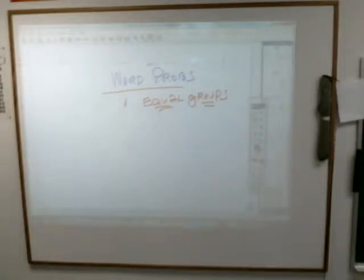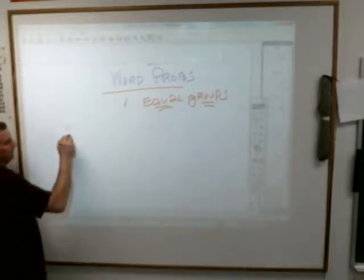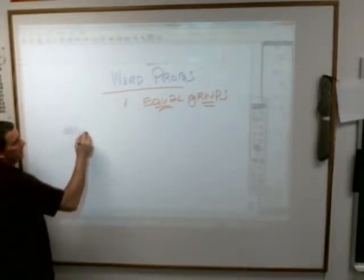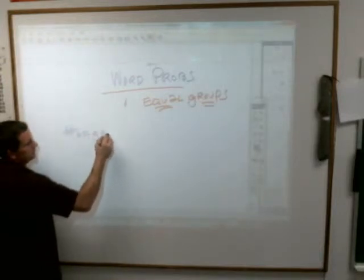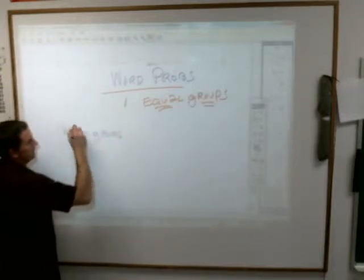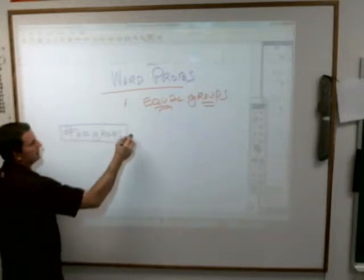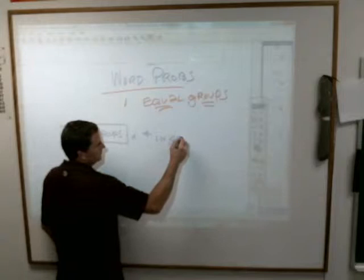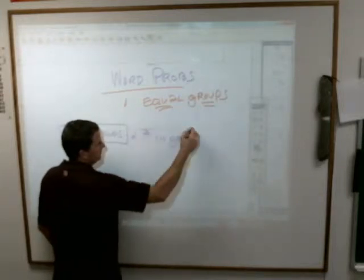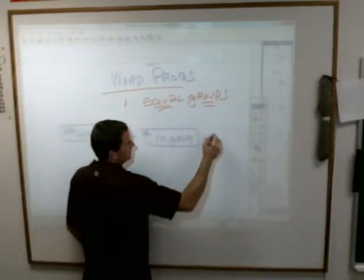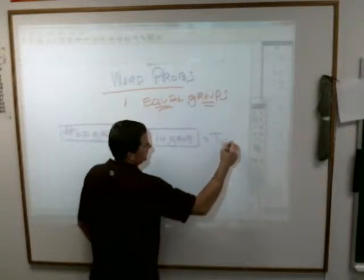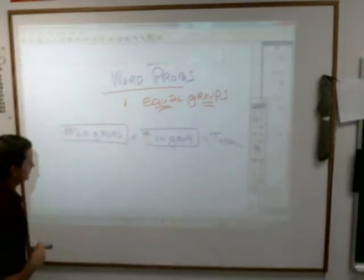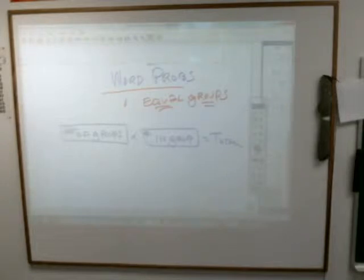The number of groups, you can abbreviate just like number of groups, times the number in each group equals a total. Make sure you write that in bold, blazing, beautiful letters.